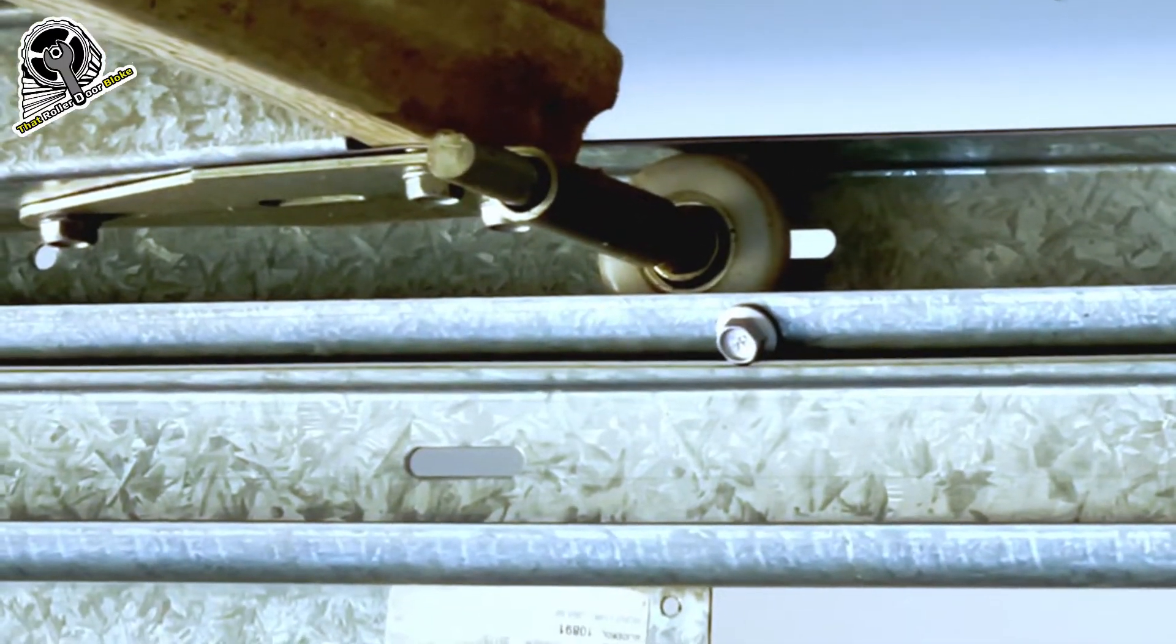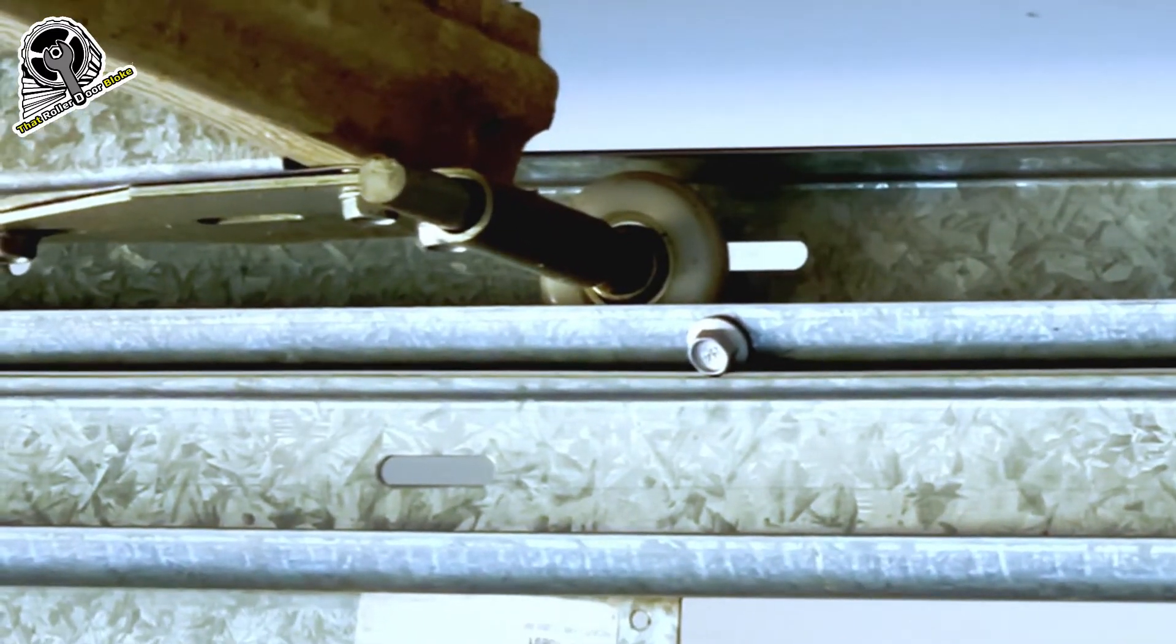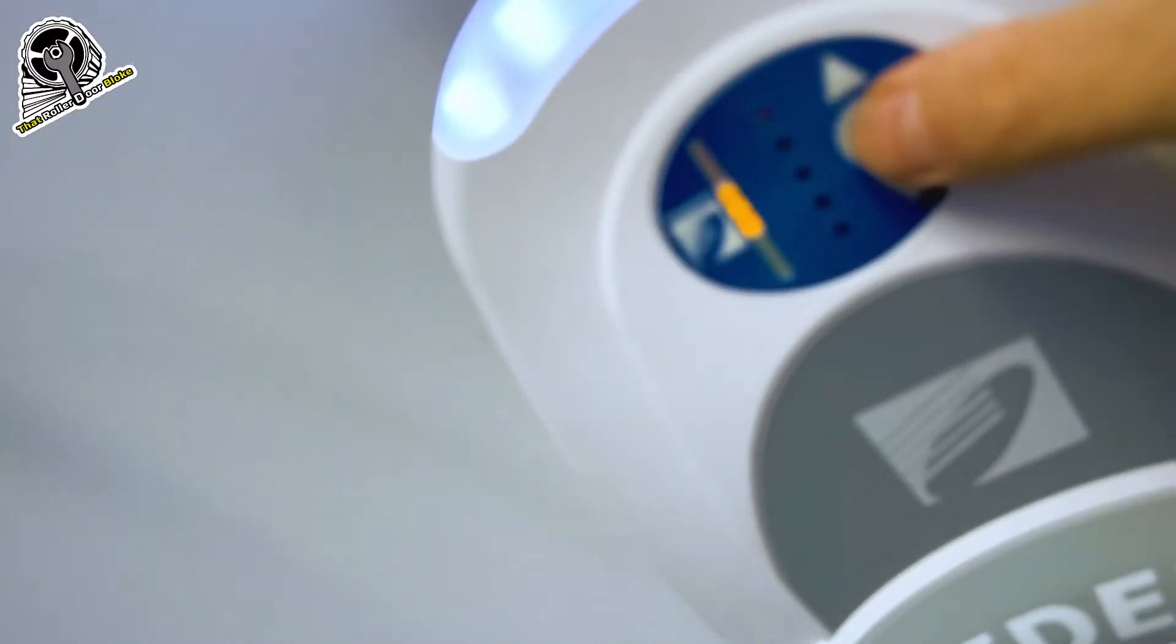If you go too far, you can use the down and up buttons to fine-tune that height. So about there looks good. When you've got the correct height of your garage door, press the center button.